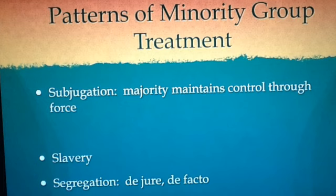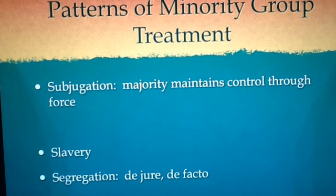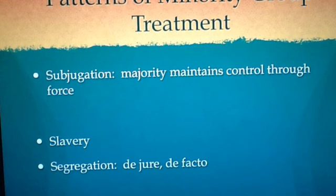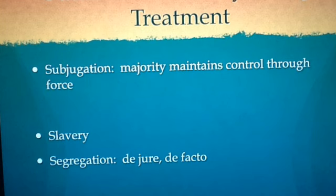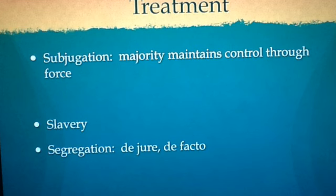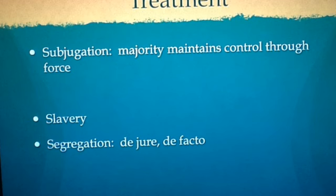Yet another type of treatment is subjugation — when the majority keeps control over the minority by use of force. One example is slavery; another is segregation. Segregation occurred after slavery ended in the U.S. We saw two types: de jure and de facto. De jure segregation is segregation based on law, such as the laws in the South keeping black and white people in separate restaurants, schools, and parts of a bus. De facto segregation is segregation based on prejudice or beliefs, such as the various racial and ethnic neighborhoods in American cities — there's no law requiring Cubans to live near other Cubans in Miami, but they oftentimes do.